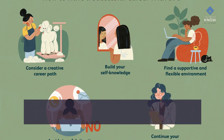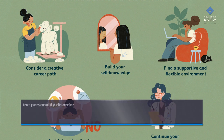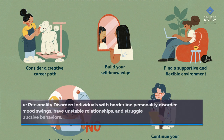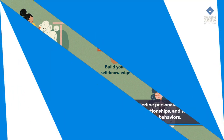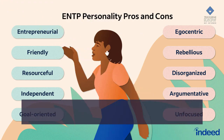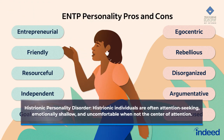Borderline personality disorder — individuals with borderline personality disorder often experience intense mood swings, have unstable relationships, and struggle with self-image. They may engage in self-destructive behaviors. Histrionic personality disorder — histrionic individuals are often attention-seeking, emotionally shallow, and uncomfortable when not the center of attention.